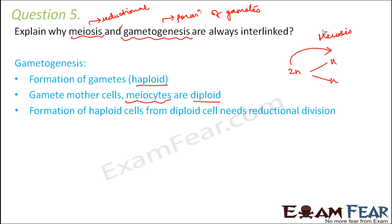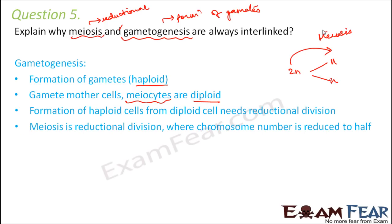So the formation of haploid cells from diploid cells requires reductional division, and meiosis is exactly that — the division where chromosome number is reduced to half. That is the link between meiosis and gametogenesis.